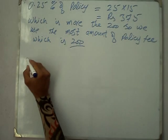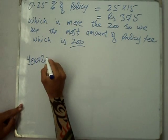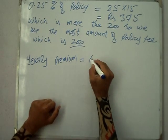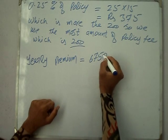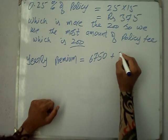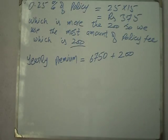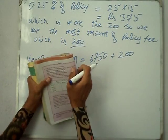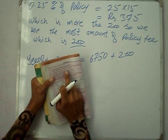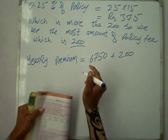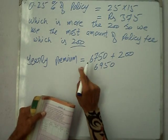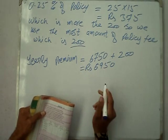Now we add both components to get the yearly premium. Yearly premium = ₹6,750 + ₹200 (since 375 exceeds the maximum of 200, the condition given is that the maximum of 0.25% of policy is ₹200). So yearly premium = ₹6,950.